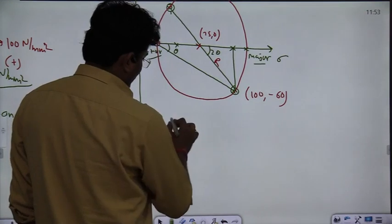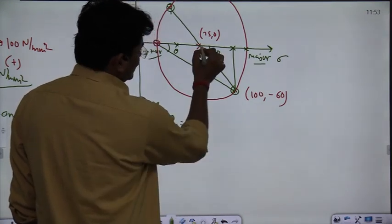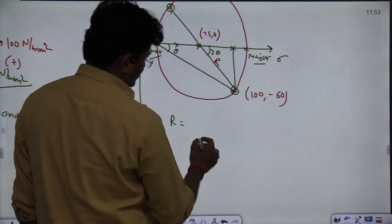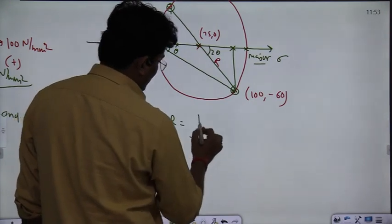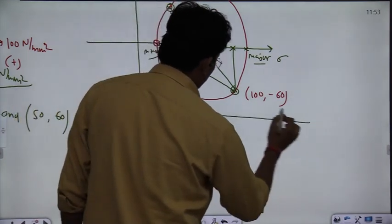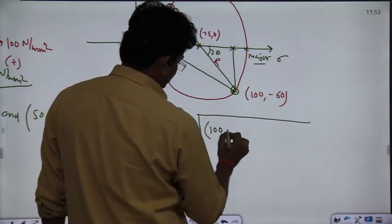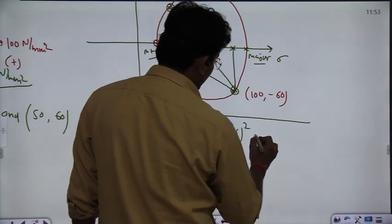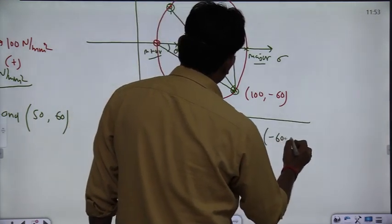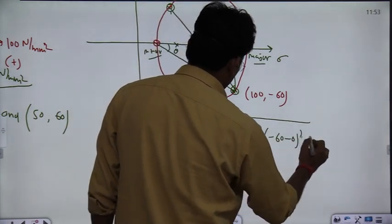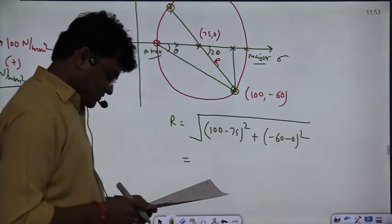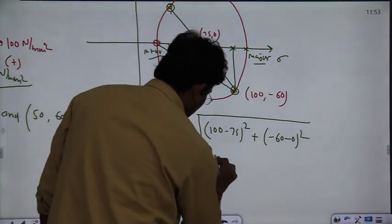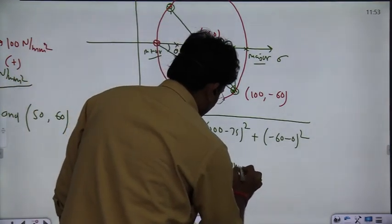How much will the radius be? Since you know the center and the point, use the distance formula: r = √[(100 − 75)² + (−60 − 0)²]. The radius is equal to 65 N/mm².